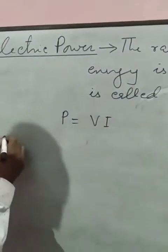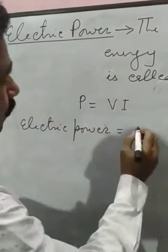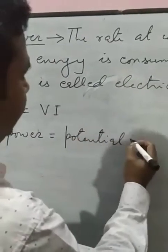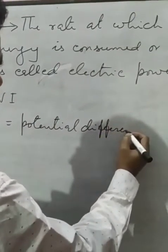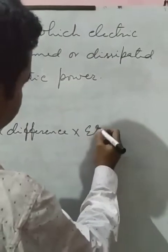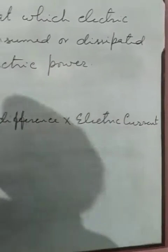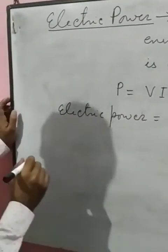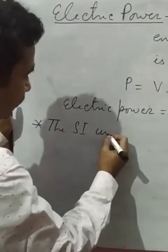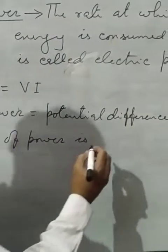It means electric power is equal to potential difference multiplied by the amount of electric current. The SI unit of power is Watt.